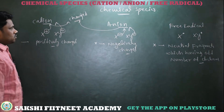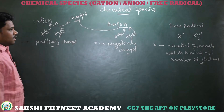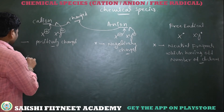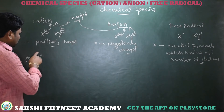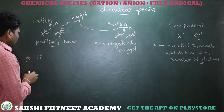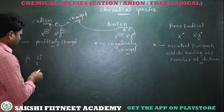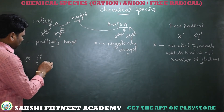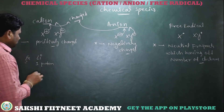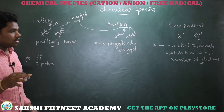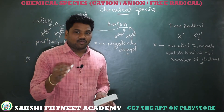I am taking an example to understand clearly what is cation, what is anion, and what is a free radical. Here I am taking lithium, which is at a neutral state. The atomic number of lithium is three, which means we have three protons. Every neutral atom shows equal number of protons and equal number of electrons.